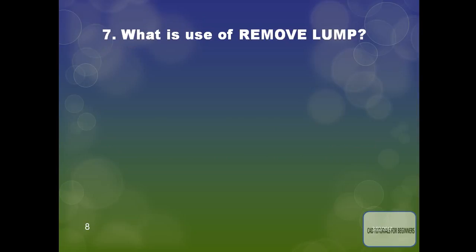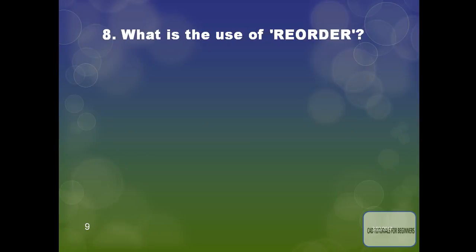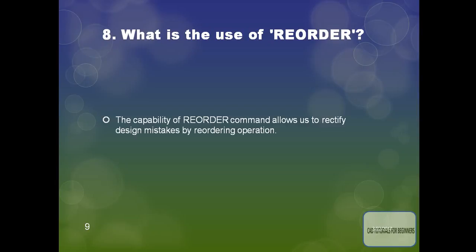What is the use of Remove Lump? Remove Lump is essentially a boolean operation. It is helpful in removing material that is not physically connected to the main body. This is the use of Remove Lump.